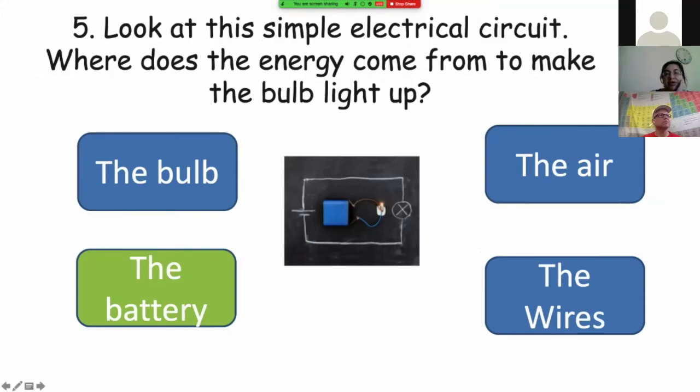Well, here, the blue thing here in the middle of the circuit is the battery. And the energy comes from the battery. The energy comes from the battery. It passes through the wires and the bulb lights up.